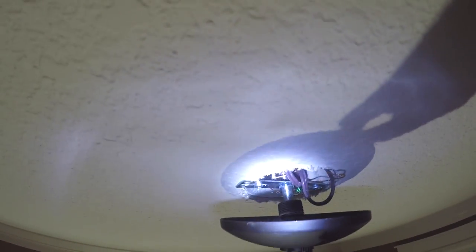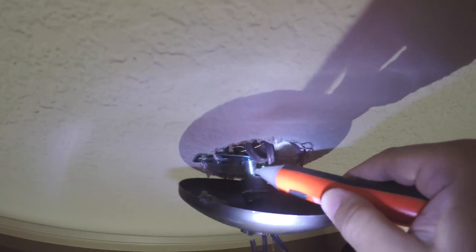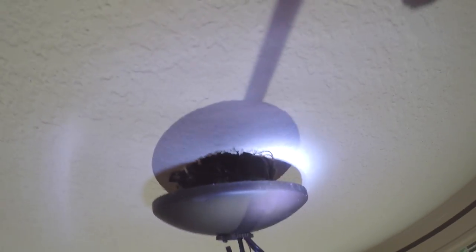In order to disconnect this, I'm going to take out the mounting bracket simply by turning it counterclockwise until this whole lamp can drop. Then I'm going to disconnect the wires using a wire cutter.